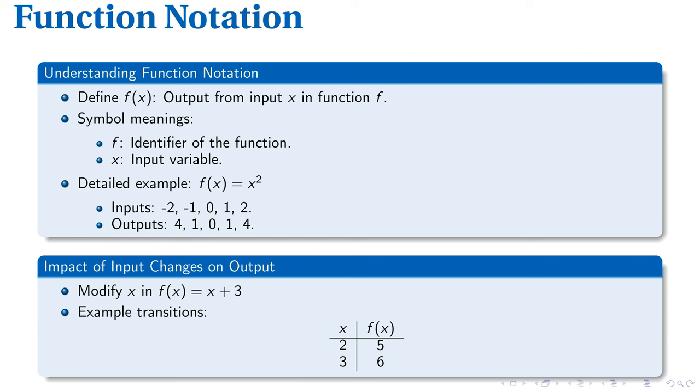An input of 2 gives us output 5, while an input of 3 results in output 6. This connection underscores the influence our choice of input has on the final output of a function.